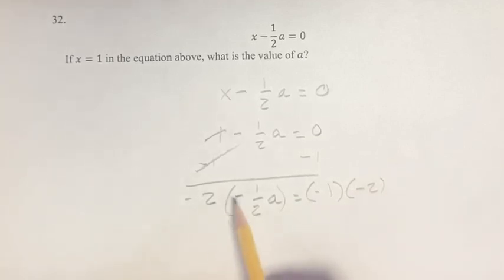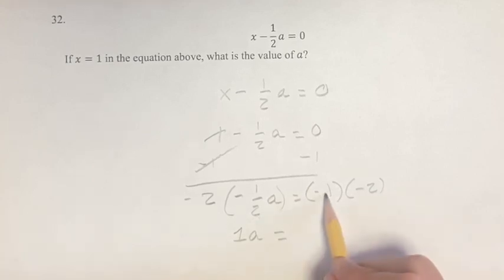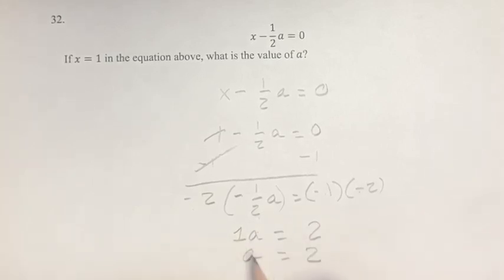So you have negative 2 times negative 1 half is positive 1 a, and this is equal to negative 1 times negative 2 is positive 2. So a is equal to 2, because 1a is just a.